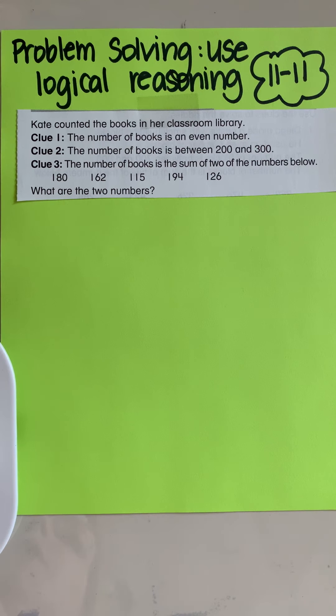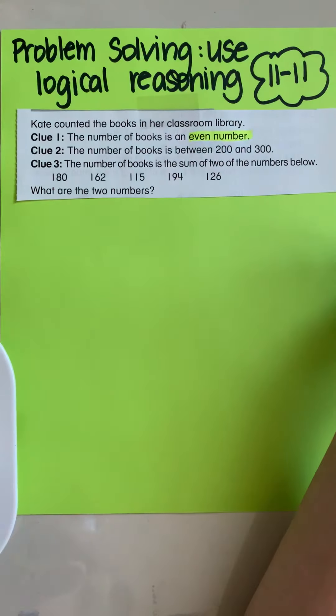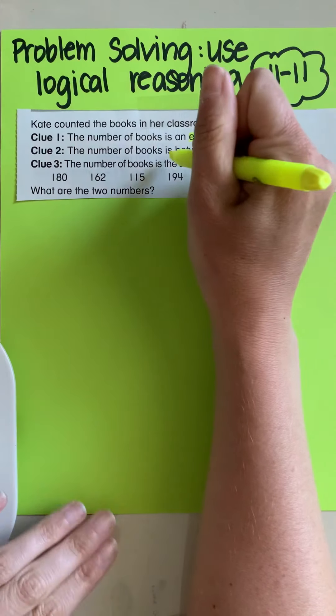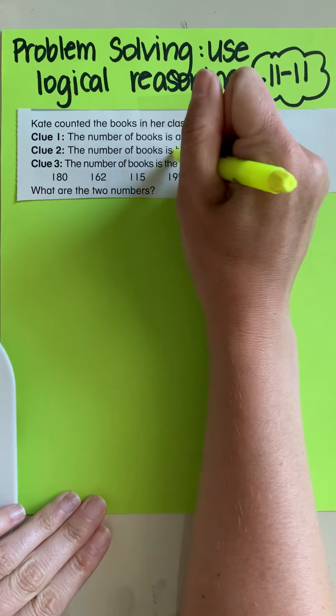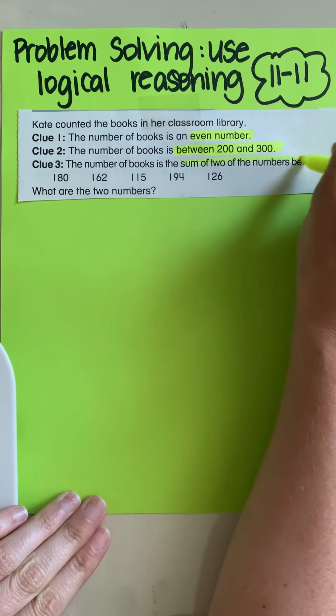So the problem is Kate counted the books in her classroom library. The first clue is the number of books is an even number. Clue number two, the number of books is between 200 and 300. Clue three, the number of books is the sum of two of the numbers below. What are the two numbers?